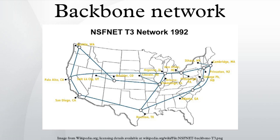A distributed backbone is a backbone network that consists of a number of connectivity devices connected to a series of central connectivity devices, such as hubs, switches, or routers, in a hierarchy. This kind of topology allows for simple expansion and limited capital outlay for growth, because more layers of devices can be added to existing layers.